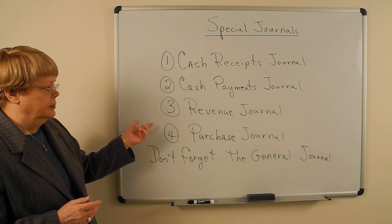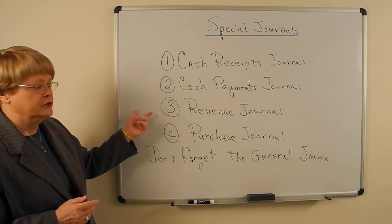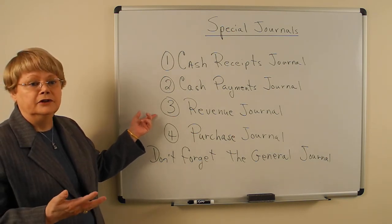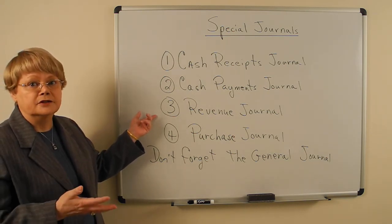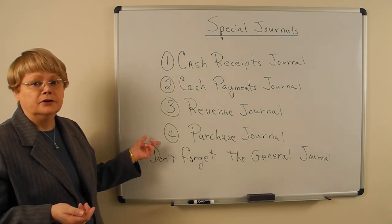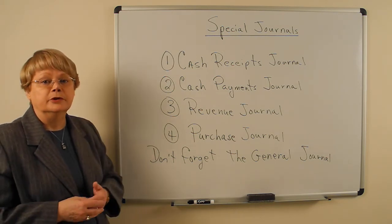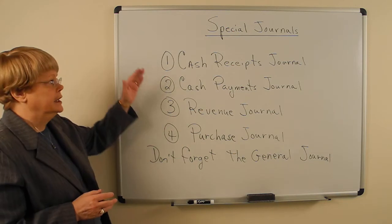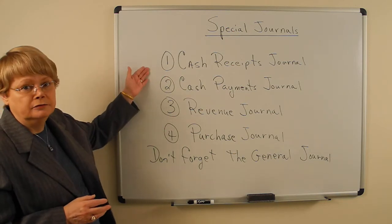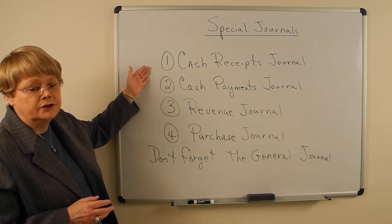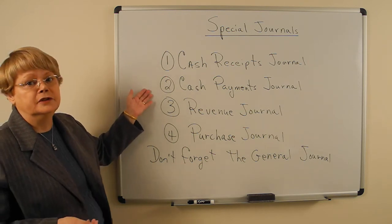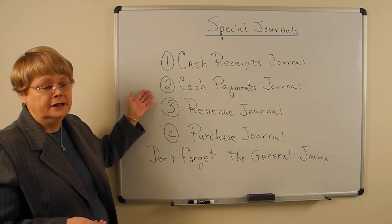To remember it: the revenue journal only has revenue going into accounts receivable, and the purchases journal only has purchases going into accounts payable. Any cash revenue or any cash received goes through cash receipts, and any cash paid goes through cash payments.